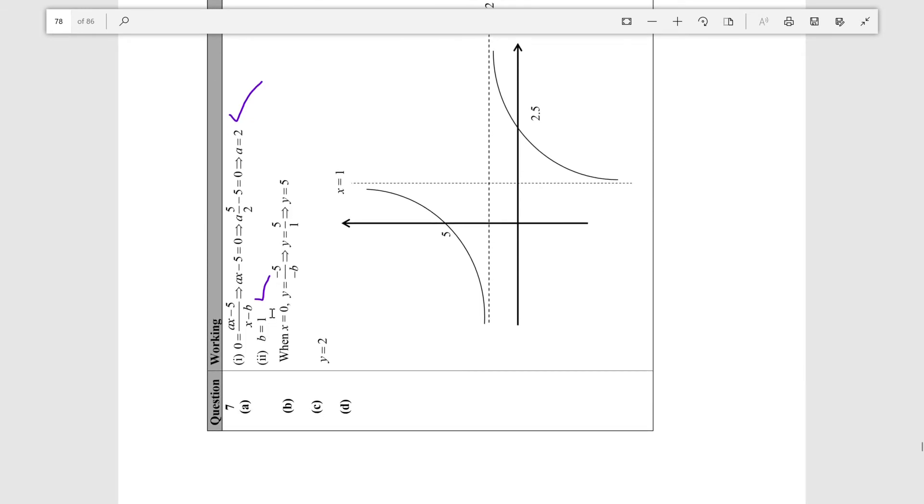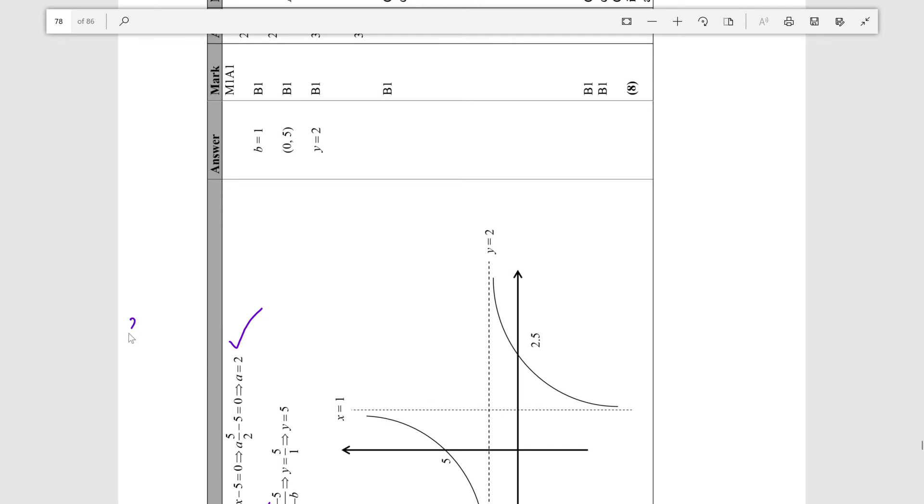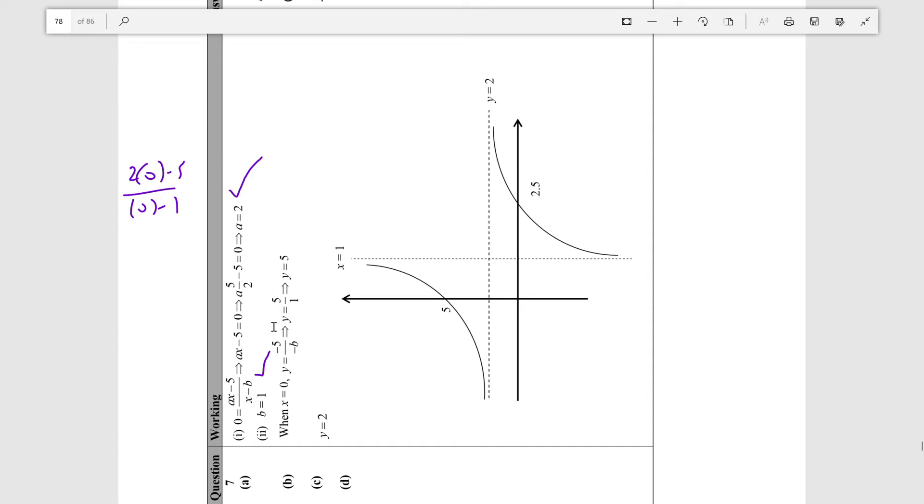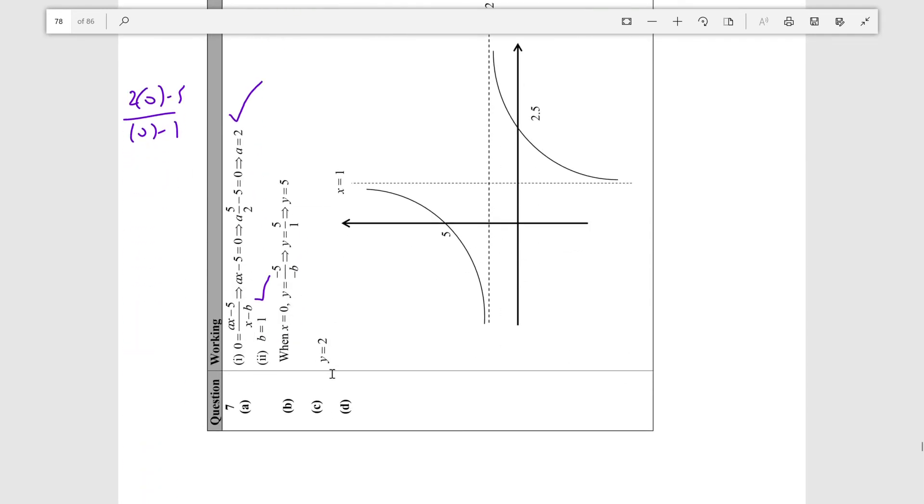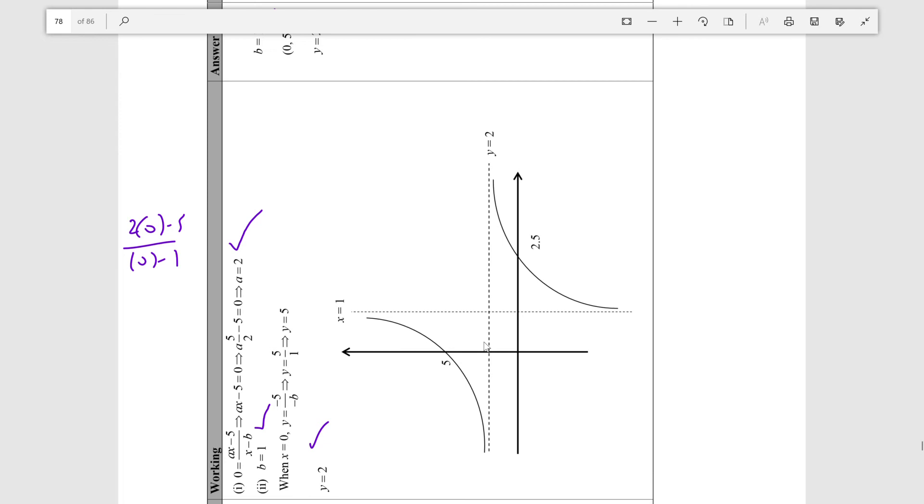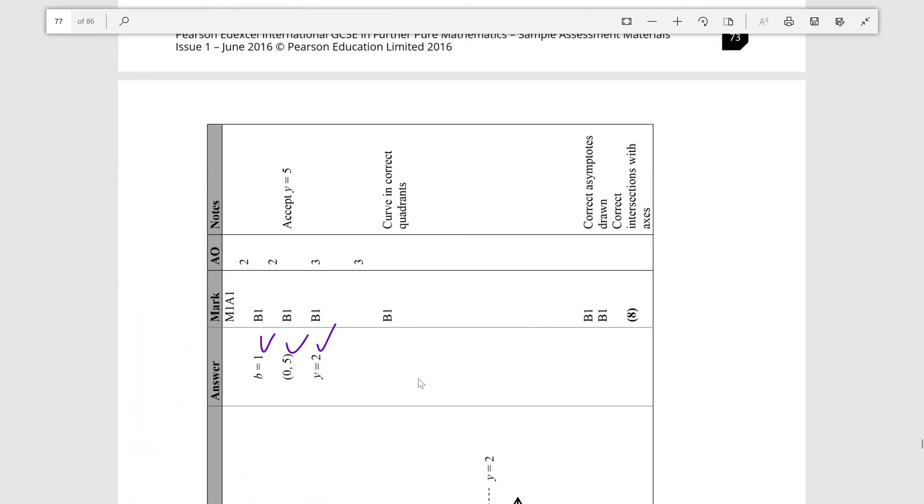When x is 0, y is minus 5 over minus b is 5 over 1 is 5. What we did is we showed the full substitution of x into 0, because we wrote it in the form 2 times 0 minus 5 over 0 minus 1. But you can also do this if you just set x to 0 and then you find the expression that it's minus 5 over minus b, it's just 5. We gave it in coordinate form, which is good. And then, yep, y is 2. They don't require working for that either. So I'm sensing a common theme where they will not require that much working or any working at all if you just want to find the asymptotes to a curve.